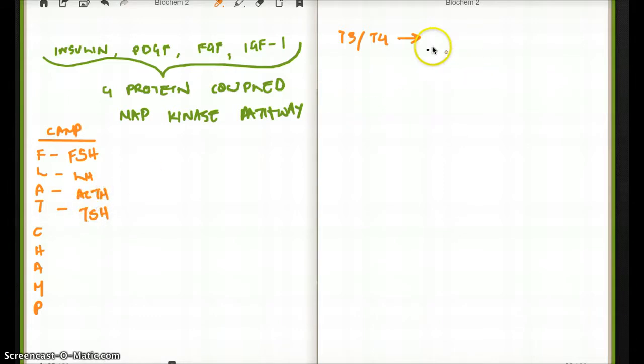Keep in mind that T3 and T4 is going to be nuclear receptors. C is going to be calcitonin and CRH. Both of them is going to be C.